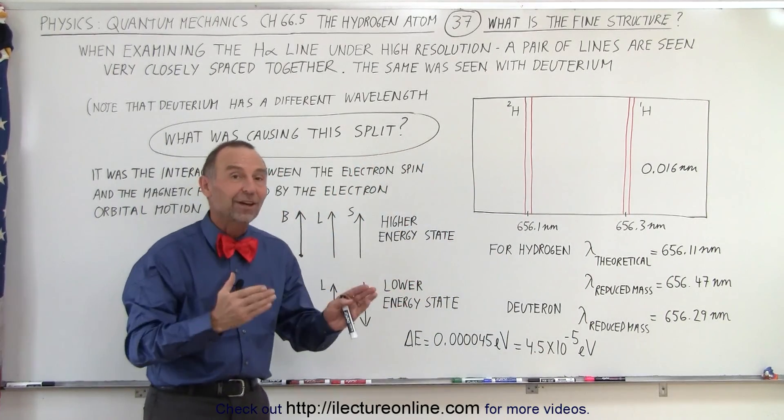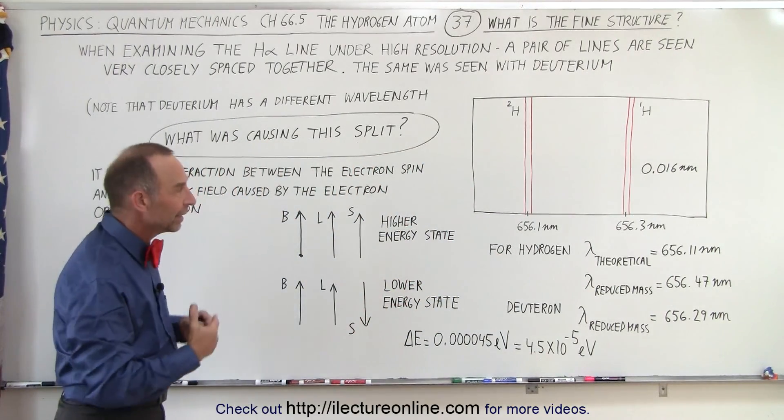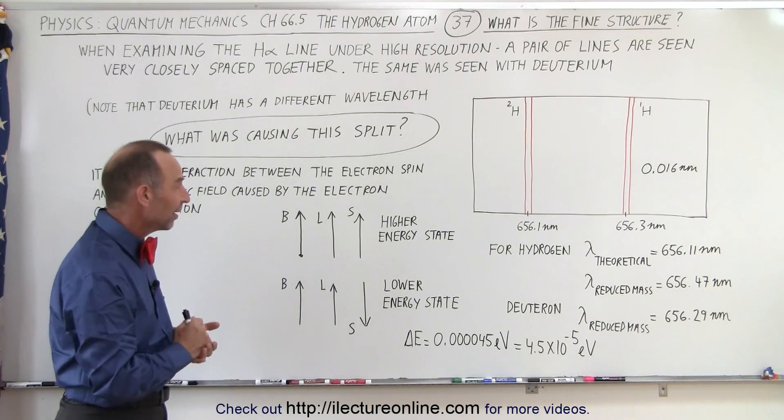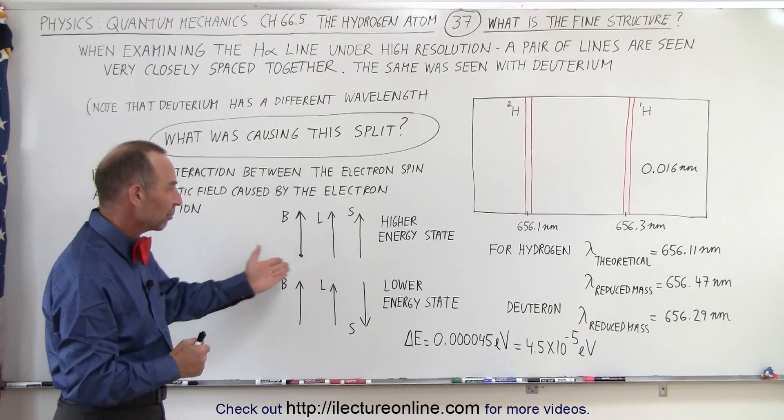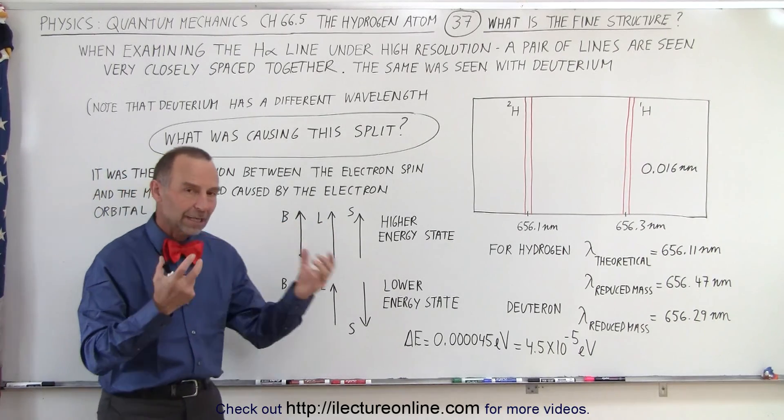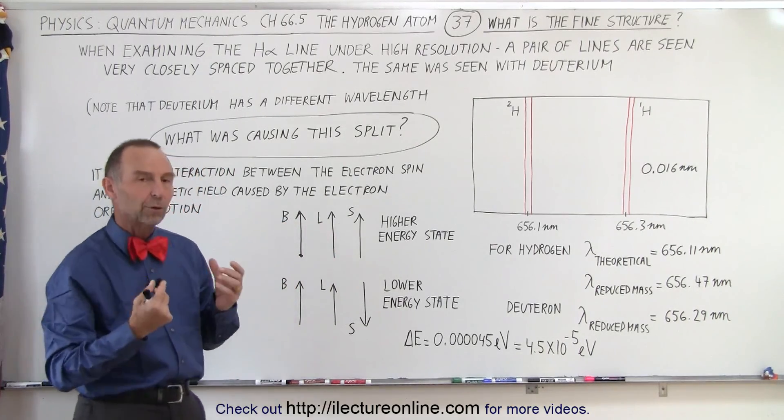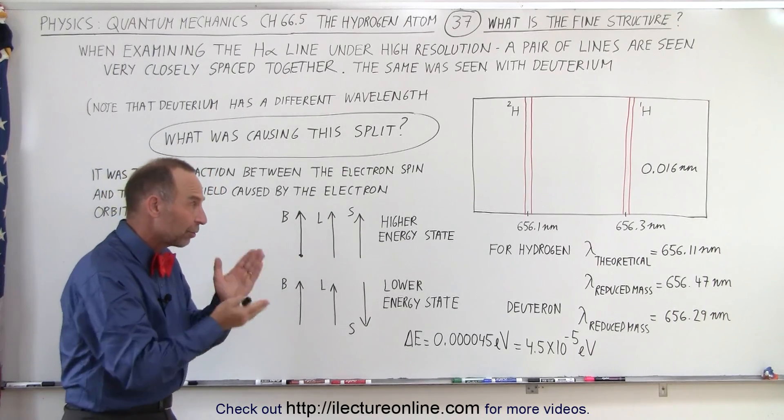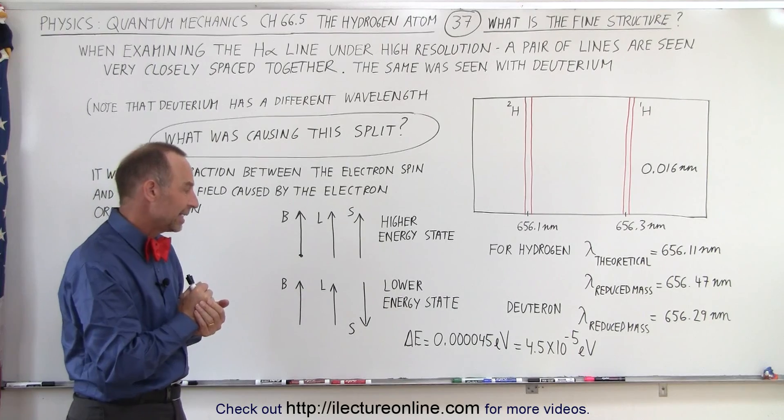But nevertheless it is there, they had to figure out why that line, that double line was there, it's called the doublet, and of course they found by looking at the interaction between the spin and the orbital motion, the interaction between the magnetic field of orbital motion and the spin direction of the electron, it calls for a slight different difference in the energies.